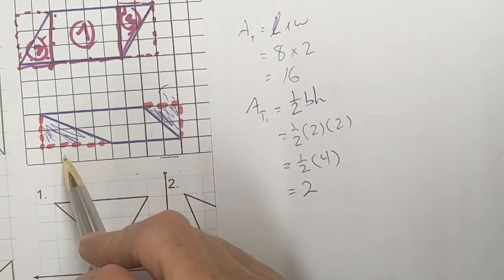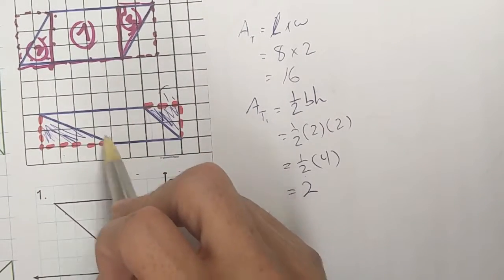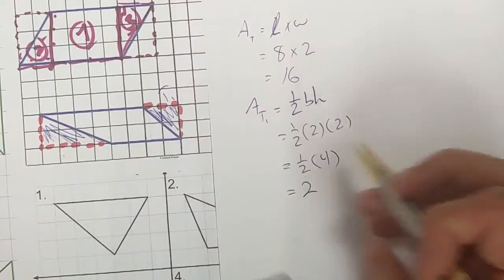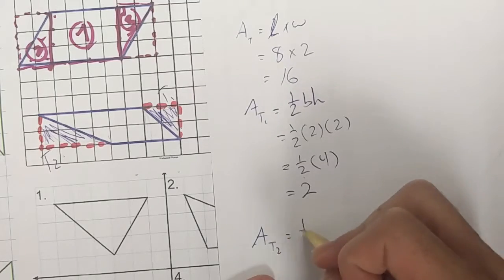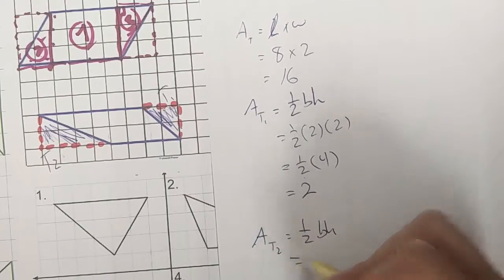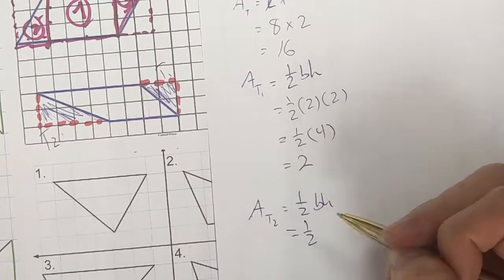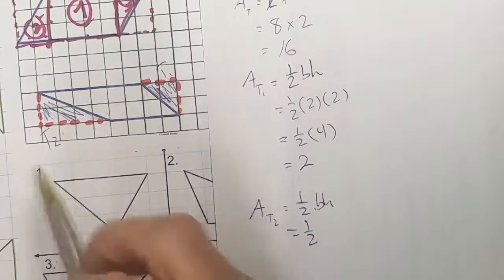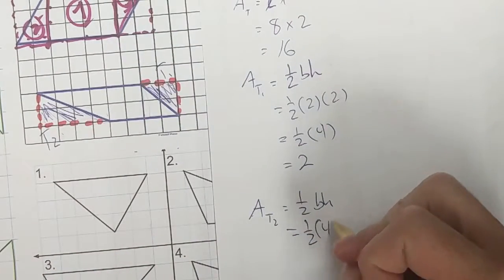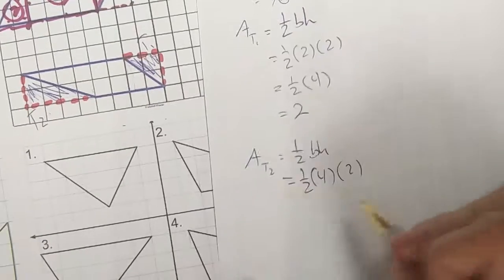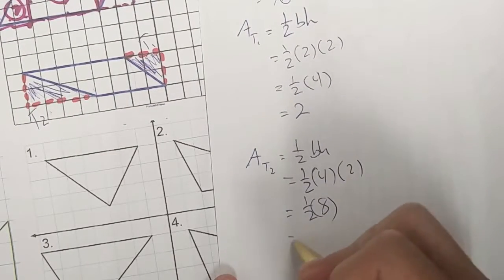I can do the same thing with this triangle over here — Triangle 2. I know a rectangle right there, and I take half of that to find this triangle. The area of Triangle 2 is half of base times height. My base here is 4 and the height is 2, so I need to find half of an area of 8, which is 4.